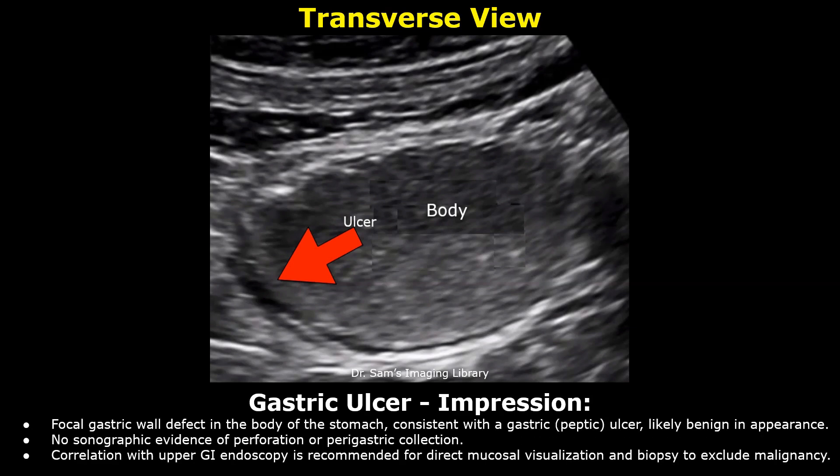Here is the impression: focal gastric wall defect in the body of the stomach, consistent with a gastric ulcer, likely benign in appearance. No sonographic evidence of perforation or perigastric collection. Correlation with upper GI endoscopy is recommended for direct mucosal visualization and biopsy to exclude malignancy.